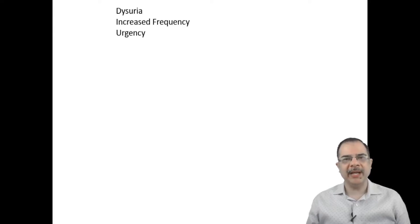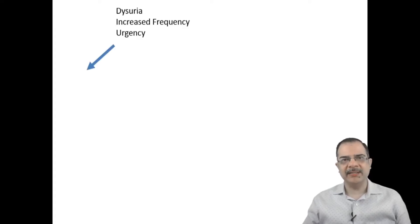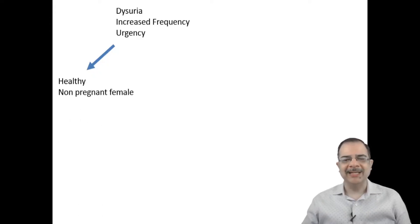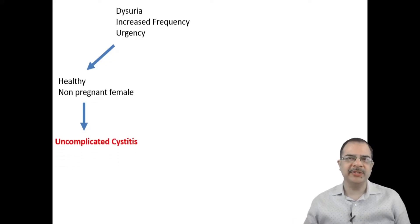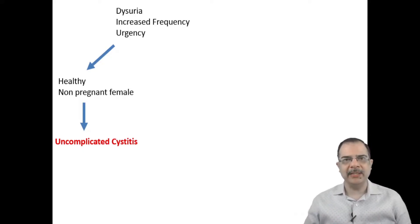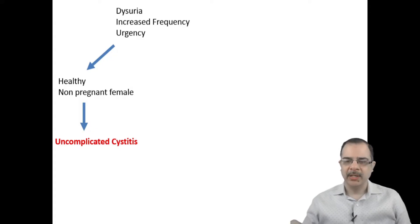Starting with the symptoms of urinary tract infection: the symptoms are dysuria, increased frequency of urination, and urgency. These are the classical triad of cystitis. If this cystitis is present in a healthy non-pregnant female, this is the definition for uncomplicated cystitis. So symptoms of burning urination, increased frequency, or urgency in a healthy non-pregnant female is a case of uncomplicated cystitis. So what should be done in this scenario?